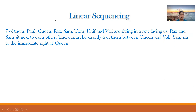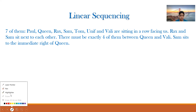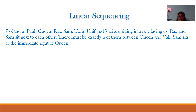The first question: seven of them — Paul, Queen, Rax, Sam, Tom, Yunif, and Wali — are sitting in a row facing us. Rax and Sam sit next to each other. There must be exactly four of them between Queen and Wali. Sam sits to the immediate right of Queen. Since they are facing us, whenever they mention their right and left, it will be opposite: their right is our left, and their left is our right.